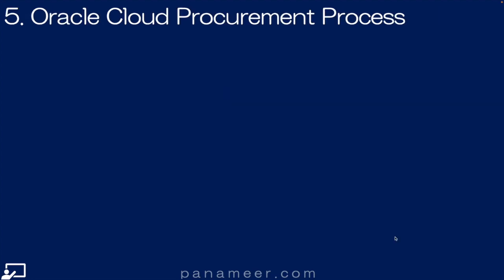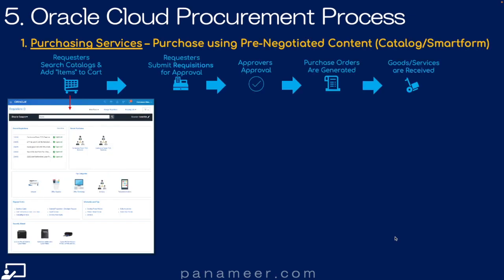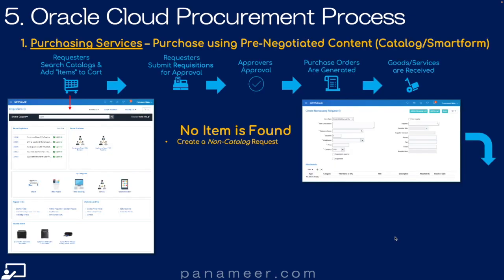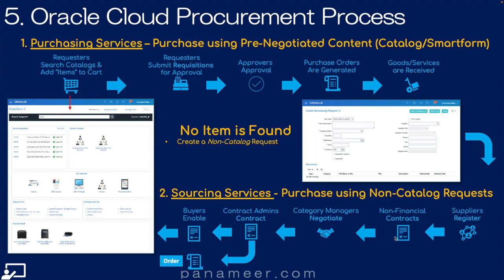Next, Slide 5: Oracle Cloud's Procurement Process. Let's walk through the procurement process in two simple steps. Step 1, purchasing services are performed. And if no catalog item or pre-negotiated content is found, Step 2, sourcing services are performed. Click the link above to watch a quick video explaining Oracle Cloud's procurement process in more detail.